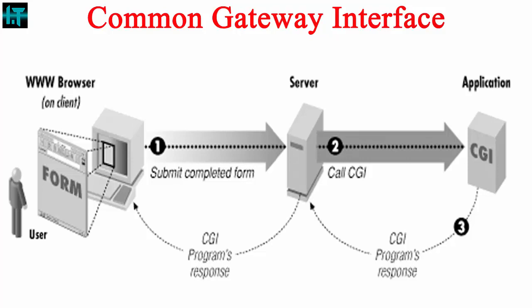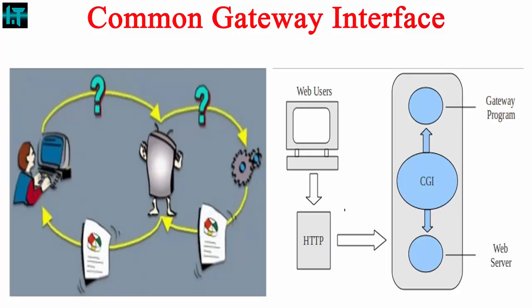The server in turn adds a MIME header and returns the HTML text to the web browser. Step four — the web browser displays the document received from the web server. I hope you understand what is Common Gateway Interface, known as CGI, and how it works.